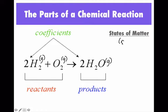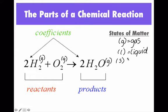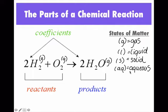Along with this, a lot of times you'll see letters coming after each substance in parentheses. What those are — they're telling you the states of matter of those substances. So what you could see is a G, which means it's a gas; an L, which means it's a liquid; an S tells you it's a solid; and AQ means aqueous.